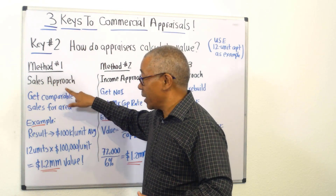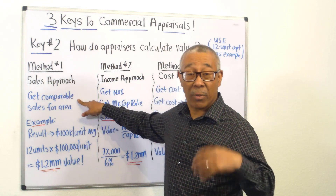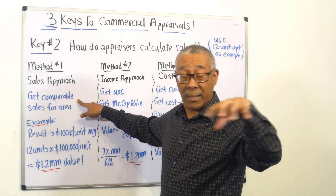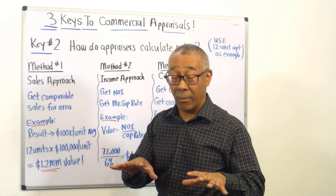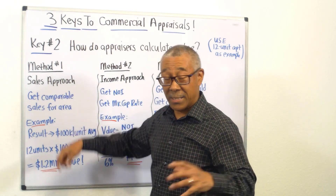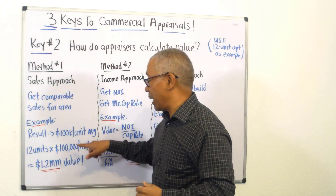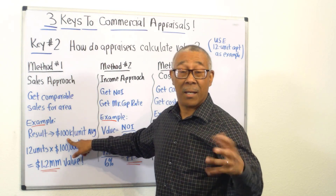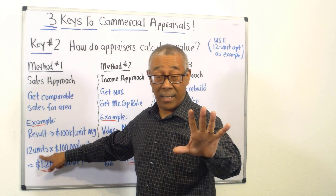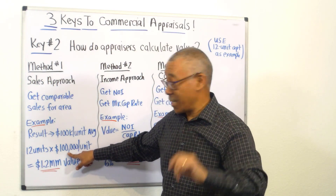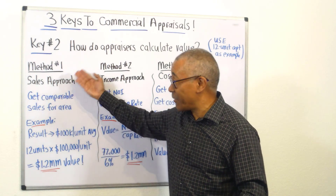Method number one is the sales approach. Using the 12-unit apartment building, the appraiser has to get comparable sales data — go around the neighborhood, find a similar property, and see what it sold for. It has to be a recent sale. For example, say the appraiser looked at four different apartment buildings and they average out to about $100,000 per unit, or $100,000 per door. You take 12 units, multiply by $100,000 per door, and it comes out to a $1.2 million valuation.